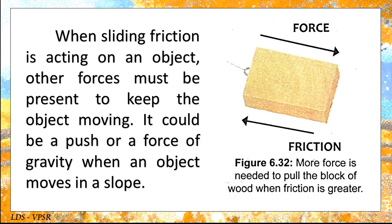This sliding friction prevents the object from moving forward as fast as it would. When sliding friction is acting on an object, other forces must be present to keep the object moving. It could be a push or the force of gravity when an object moves on a slope.